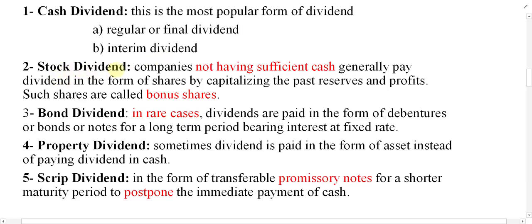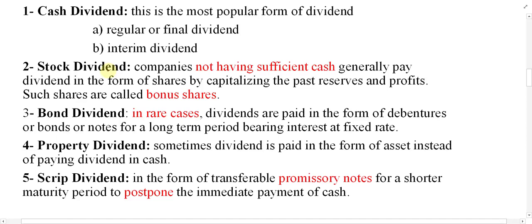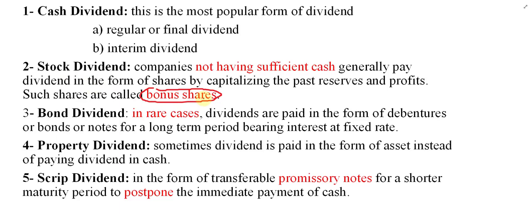The second type is stock dividend. When the company distributes stock as a dividend among the shareholders, this is called a stock dividend. It means there is no sufficient cash available, so instead of distributing cash, the company distributes extra shares to existing shareholders free of cost. Those shares received as dividend are called bonus shares. Note that 'stock' and 'share' refer to the same thing — Americans typically say stock, while the British say share.